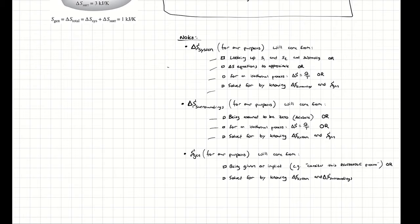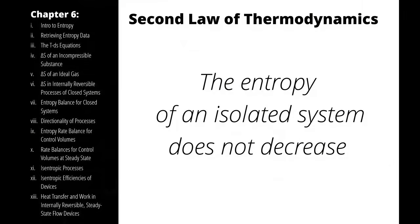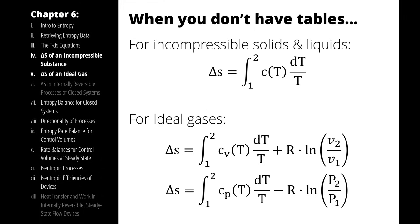This option leads us to our next conversation: what do you do when you don't have tables? We have relationships for entropy that can be described as functions of temperature using specific heat capacities. These equations can be derived, but I'm skipping over that for the moment. For incompressible solids and liquids, the change in specific entropy — a lowercase s — is the integral of the specific heat capacity, which is a function of temperature, multiplied by 1/T dt.